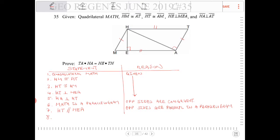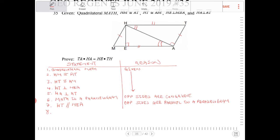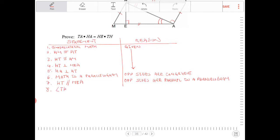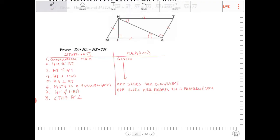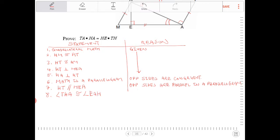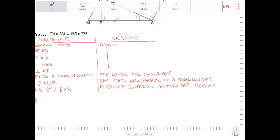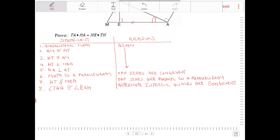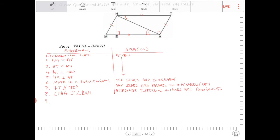Now that I know opposite sides are parallel, I can say that these angles are going to be congruent. Specifically, angle THA is congruent to angle EAH, because alternate interior angles are congruent.